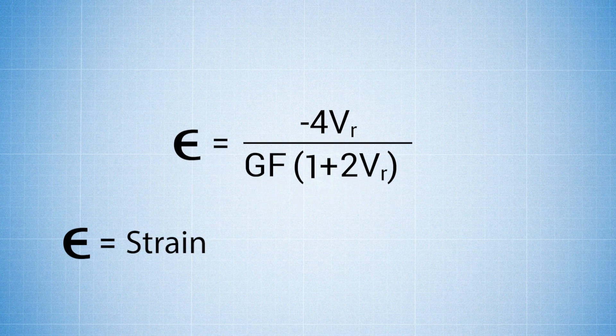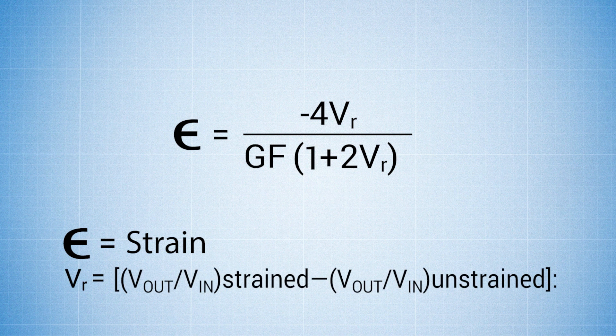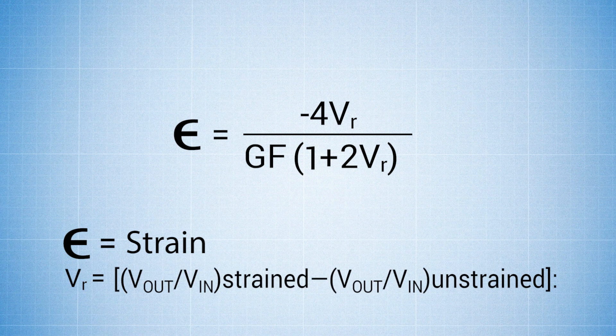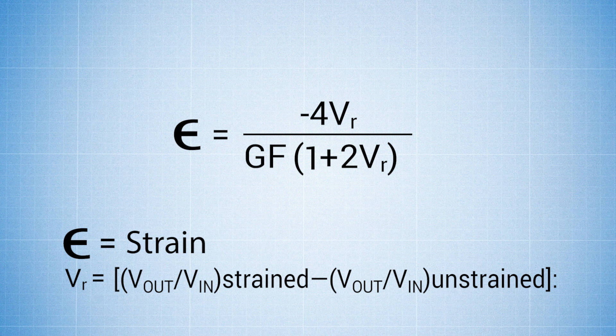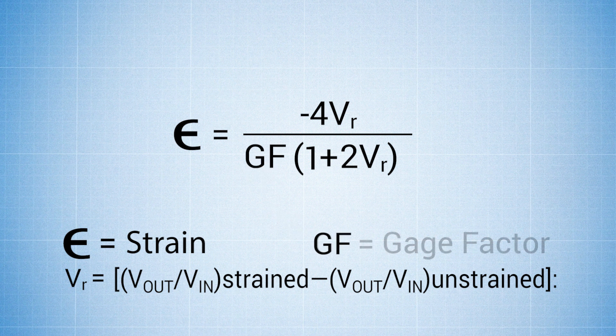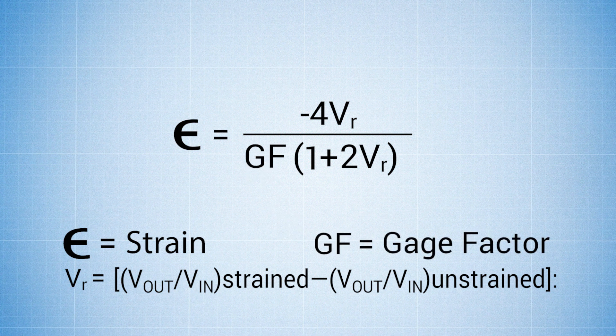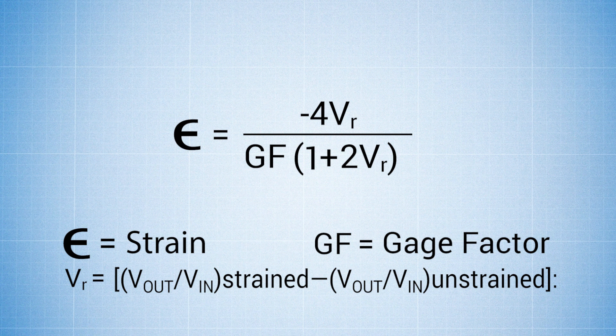Epsilon equals strain, and Vr equals the voltage change when the strain gauge is strained minus the voltage change when it's unstrained. Gf stands for gauge factor. It should be listed on your packaging slip. Usually it's close to 2.00.